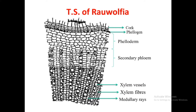Xylem vessels are lignified vessels in Rauwolfia with dimensions of 350 microns in length and 50 microns in width. The xylem fibers are also lignified with pointed or bifurcated ends. The medullary rays extend from the center to the cortex and contain 1 to 5 cells. Most importantly, stone cells are absent in Rauwolfia root and xylem — this is a most important microscopic characteristic.